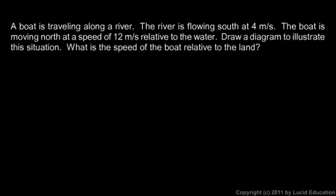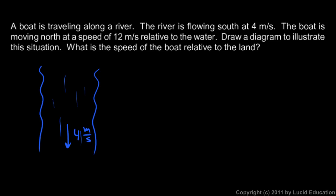This example is similar, except the direction is reversed. The river is still flowing at 4 meters per second to the south — we'll draw that again. Here's our river at 4 meters per second. This time the boat is moving north at 12 meters per second relative to the water. Here's the boat moving at 12 meters per second to the north. Draw a diagram to illustrate the situation — we just did that.